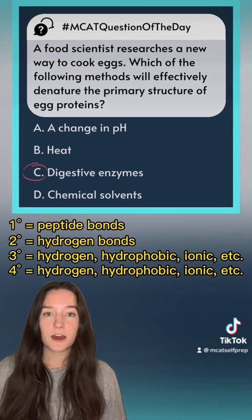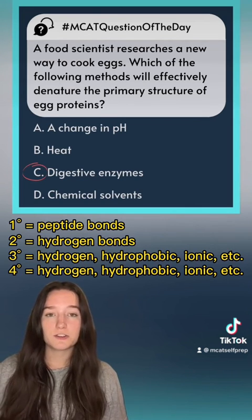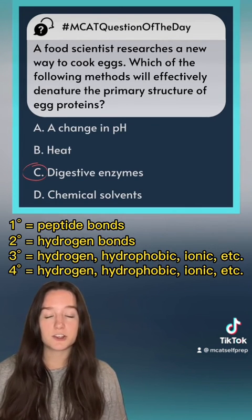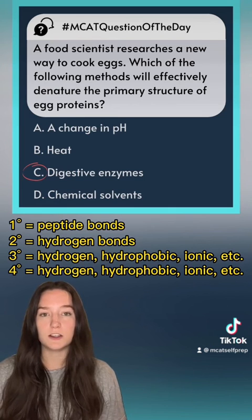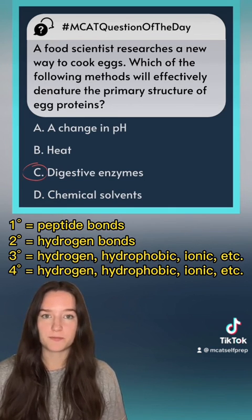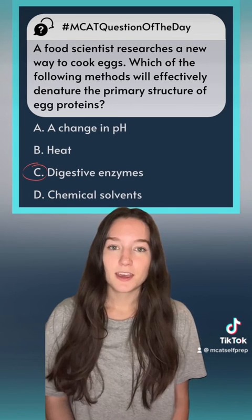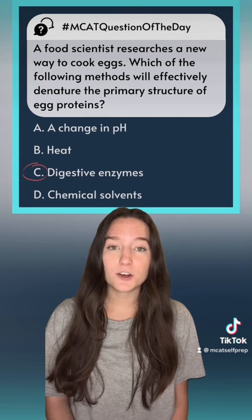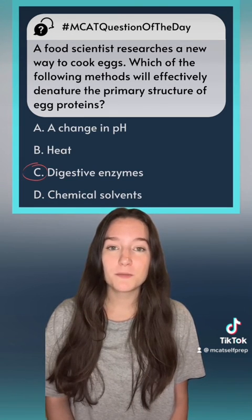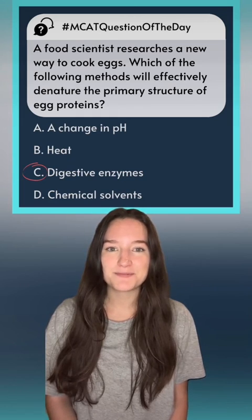After this entire review, we can easily deduce that answer choice C, digestive enzymes, is the only way to denature the protein all the way to its primary structure. If you enjoyed this MCAT question of the day, give us a follow and go check out MCATselfprep.com for more tips, tricks, and resources on how to ace your MCAT.